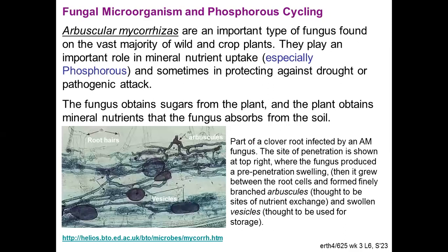There isn't a direct analogy for the way phosphorus is stored and impacted in plants to the story for nitrogen, but there are some quasi-analogous situations that happen in some fungi which make little zones called arbuscular structures that are able to bring in phosphorus even when it's in a low-solubility form in the environment, pre-concentrate it, affect changes to it, and transfer it back out into the system for other organisms to use. In a way, this is analogous to the rhizome situation for plants and nitrogen fixation.